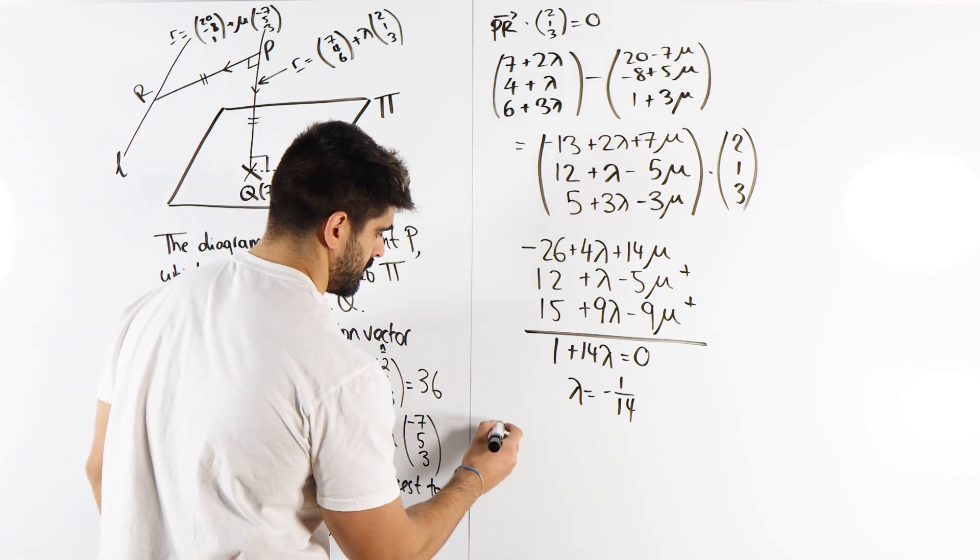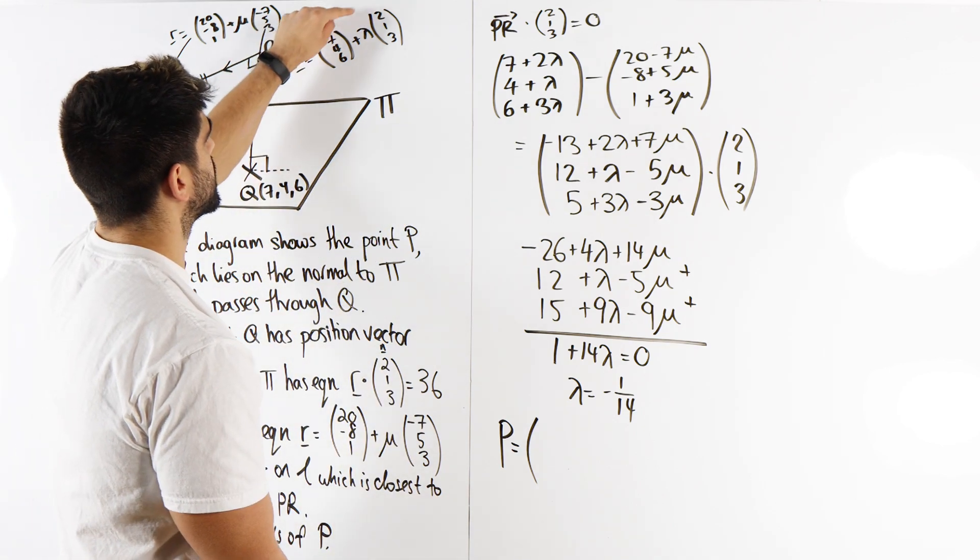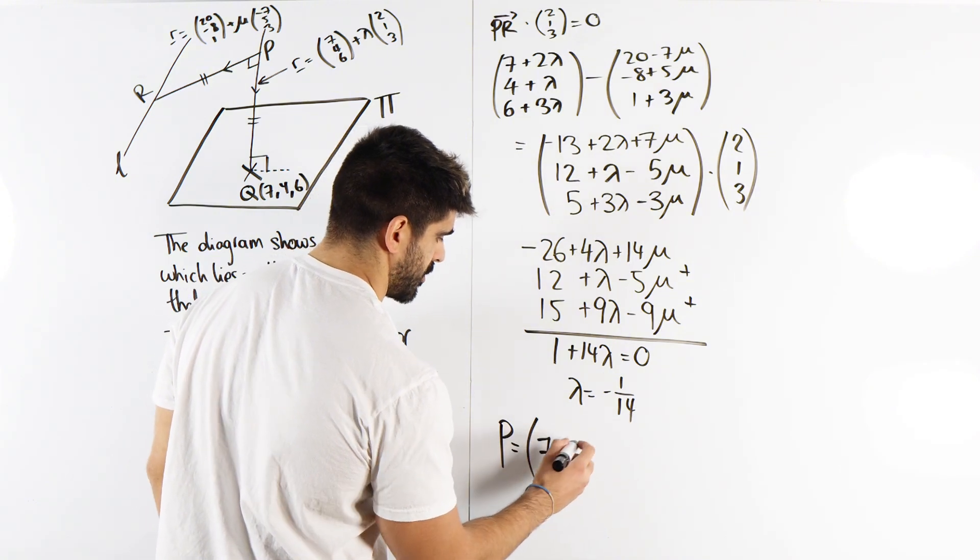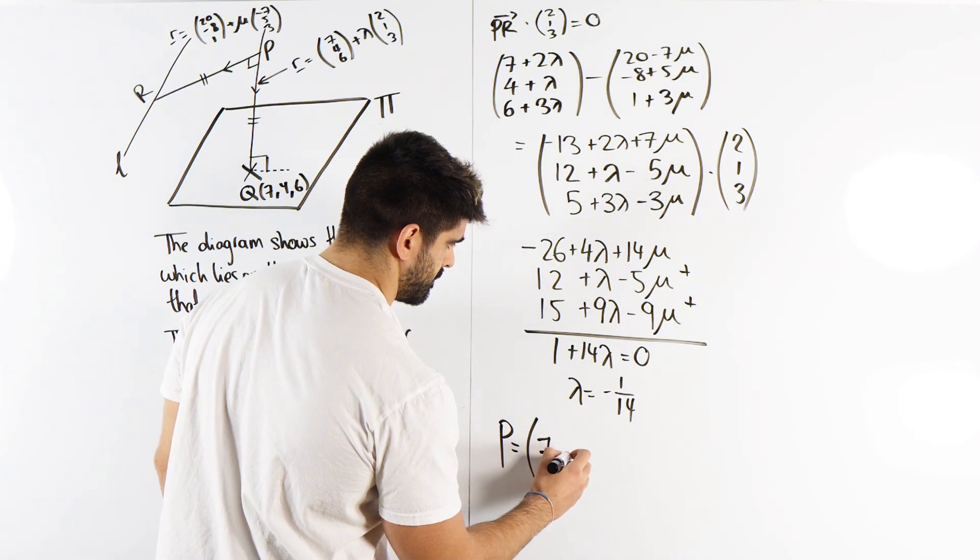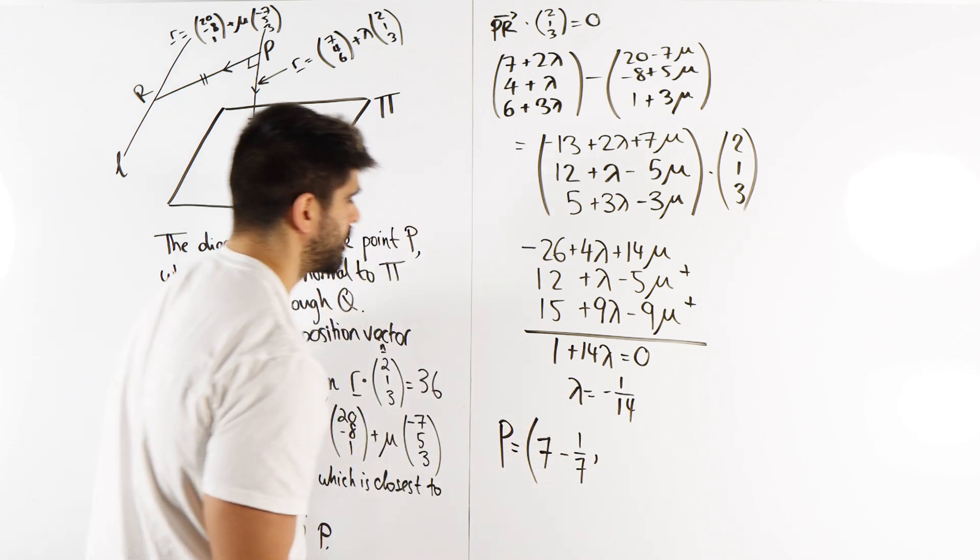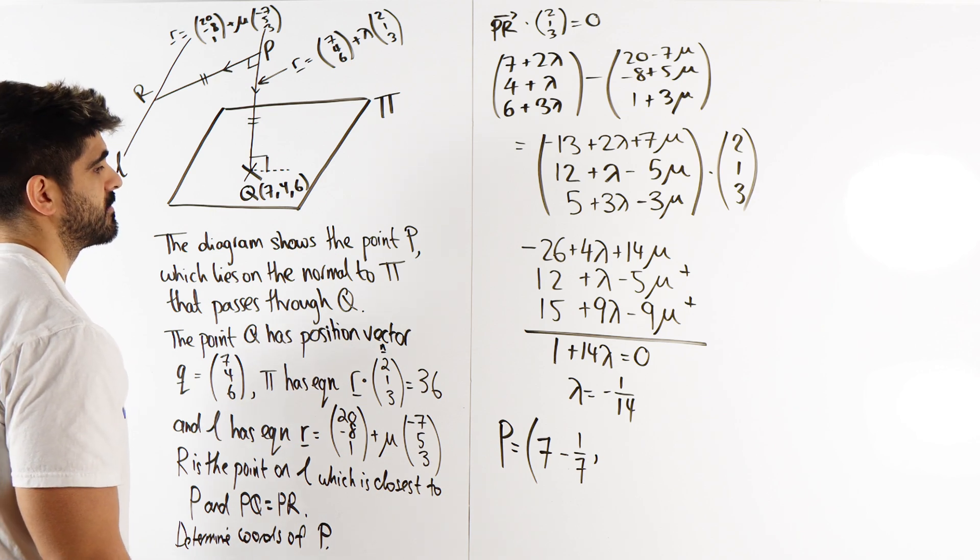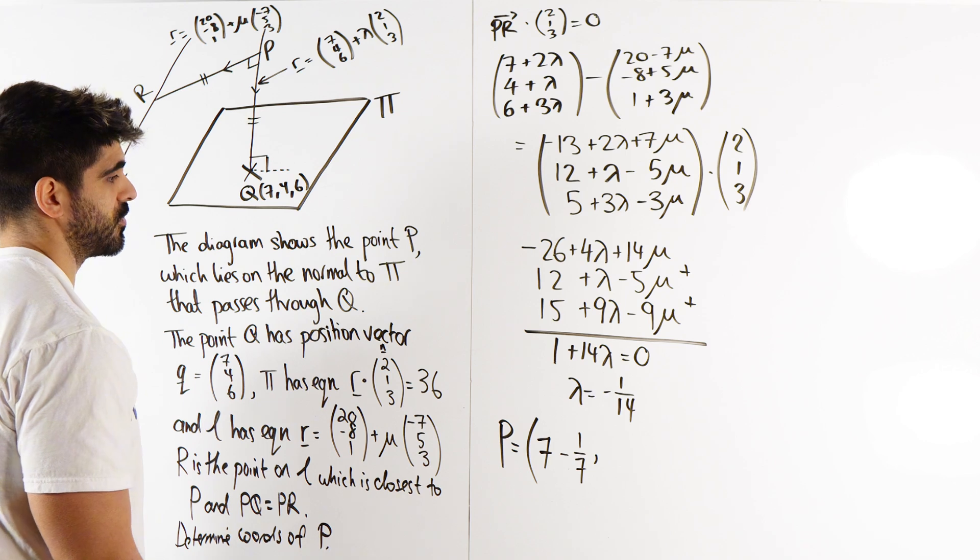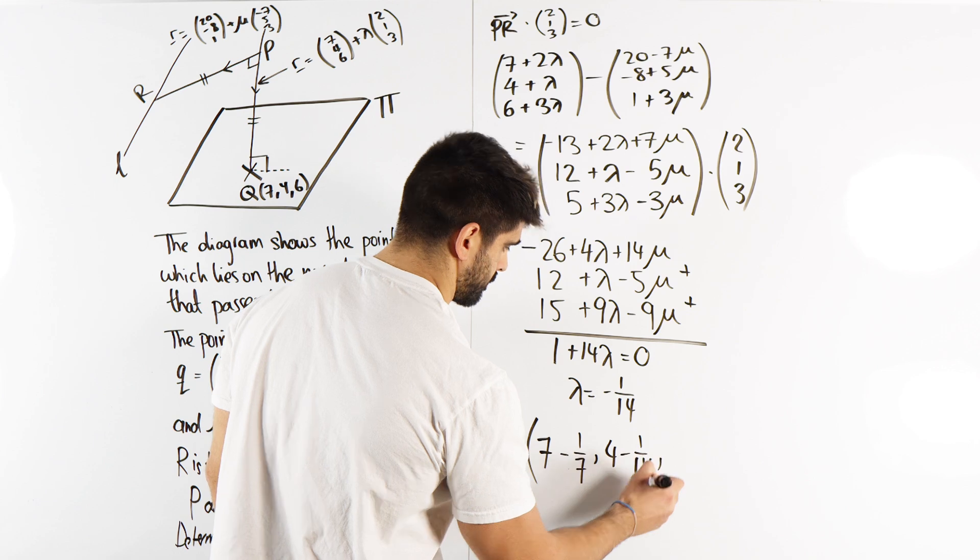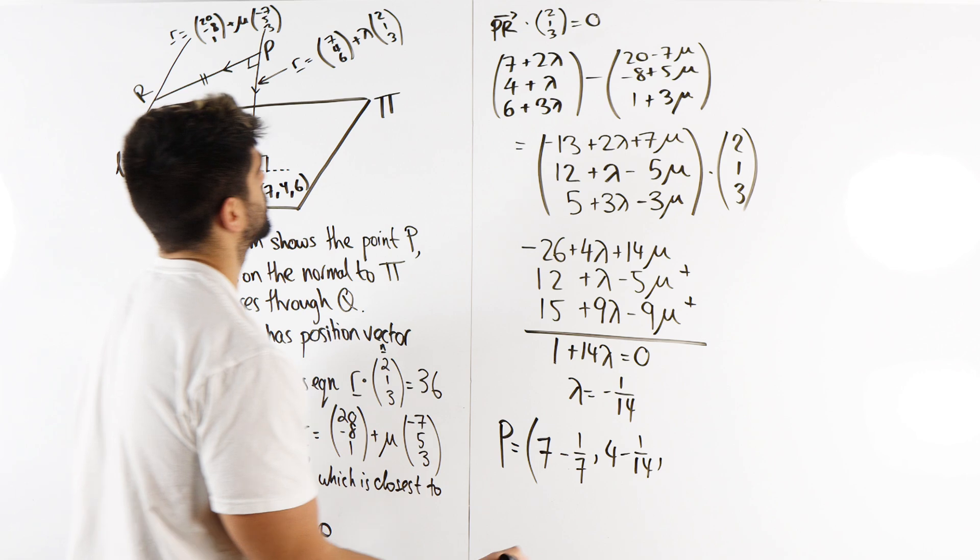So P is going to be 7 plus 2 lambda. So 2 lots of these: 7 minus 2 over 14, which is 1 seventh. 4 plus lambda, which is minus 1 over 14, so 4 minus 1 over 14. And then 6 minus 3.